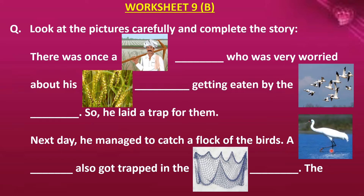Now look at this picture — yes, what is this? A crane, isn't it. So a crane also got trapped, stuck in the net. See, this is a net. So next day the farmer managed to catch a group of birds, and in that group a crane also got trapped — got stuck in the net.